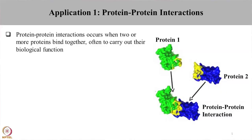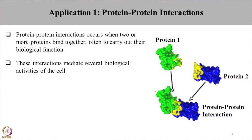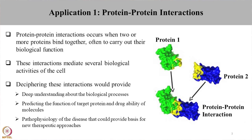Protein-protein interaction occurs when two or more proteins interact with each other to carry out a biological function. These interactions mediate several cellular processes, and understanding these interactions would help in understanding the function of proteins and identifying disease pathobiology. Once we dissect these interactions, we can end up finding druggable targets and new therapeutic approaches that can be used to treat the disease.